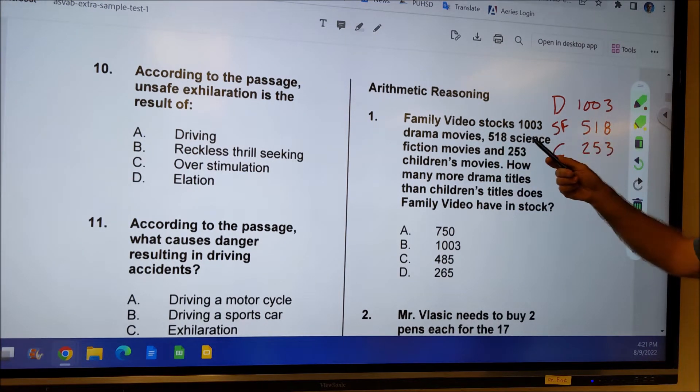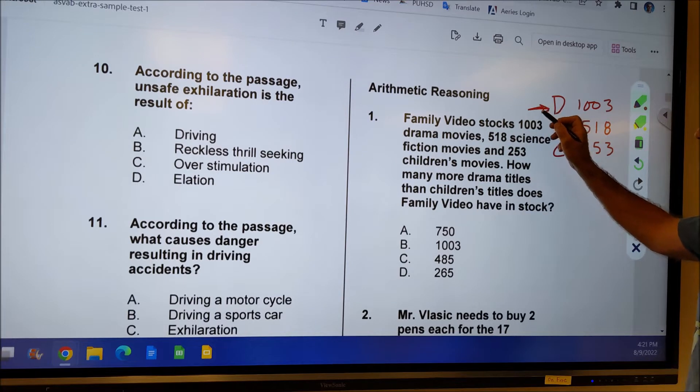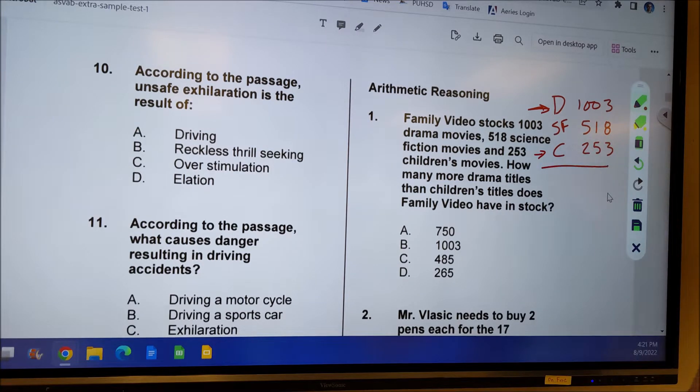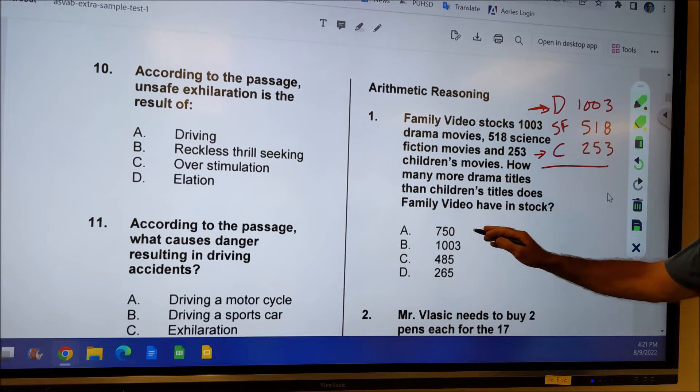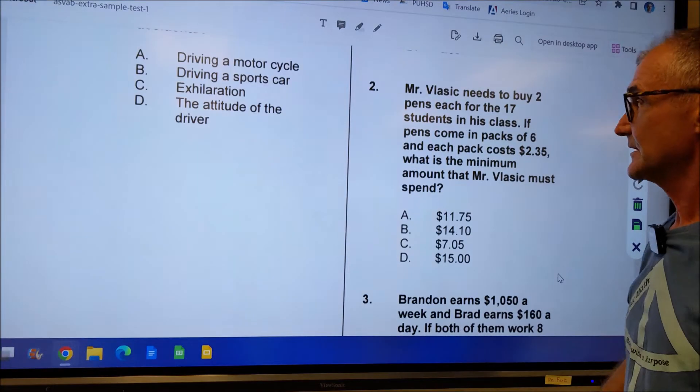So I just read the problem and translate it to the numbers. Family video stocks 1,003 drama movies, 518 science fiction movies, 253 children movies. Now I've got to read carefully here. How many more drama movies are there than children's titles? So this is actually an unrelated number. It's not even part of the problem. I just want to know the difference between drama and children. So I do 1,003 minus 253. I could actually do that pretty quickly because I could just round this to 1,000 and 250. 1,000 minus 250 is 750. It's right there, answer A. Then I double check the other answers and see there's nothing close to that.